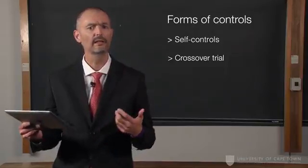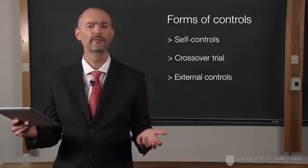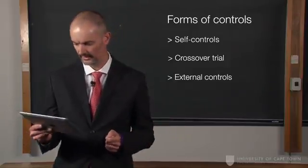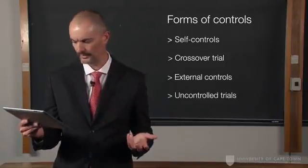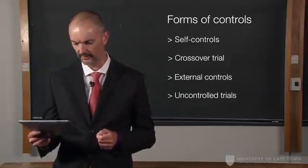We can also look at external controls, for instance, historical controls. Very important if no treatment in a certain area existed before we did this trial. We can also do totally uncontrolled trials where we're just looking at variations in outcomes and we'll form the groups based on those.